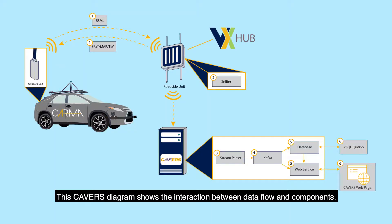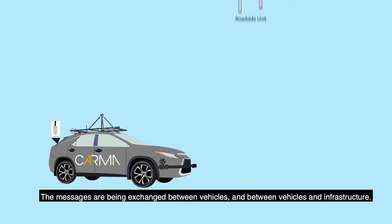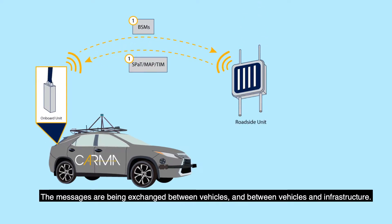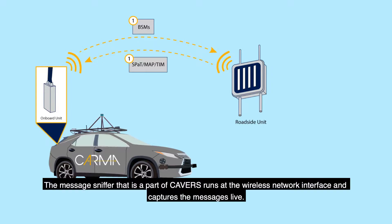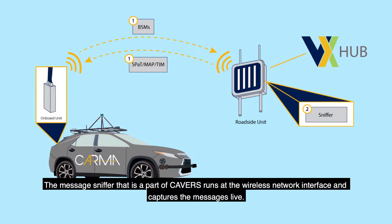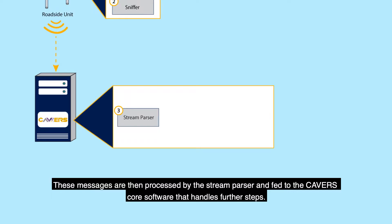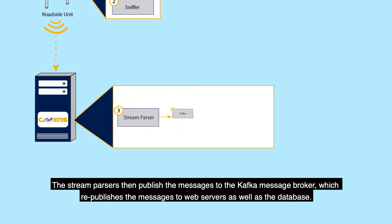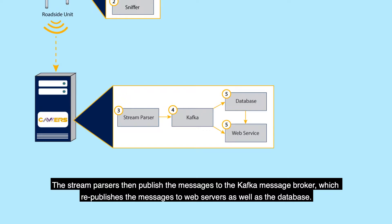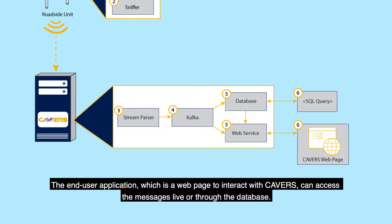This CAVERS diagram shows the interaction between data flow and components. The messages are being exchanged between vehicles and between vehicles and infrastructure. The message sniffer that is part of CAVERS runs at the wireless network interface and captures the messages live. These messages are then processed by the stream parser and fed to the CAVERS core software that handles further steps. The stream parsers then publish the messages to the Kafka message broker, which republishes the messages to web servers as well as the database. The end user application, which is a web page to interact with CAVERS, can access the messages live or through the database.